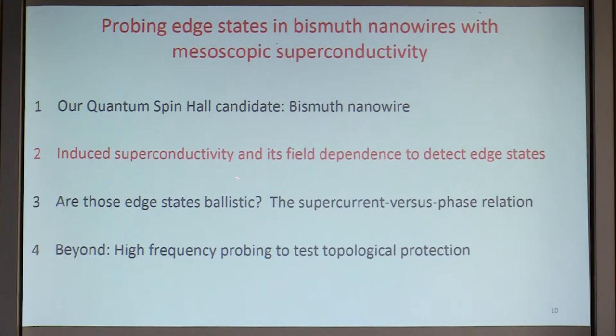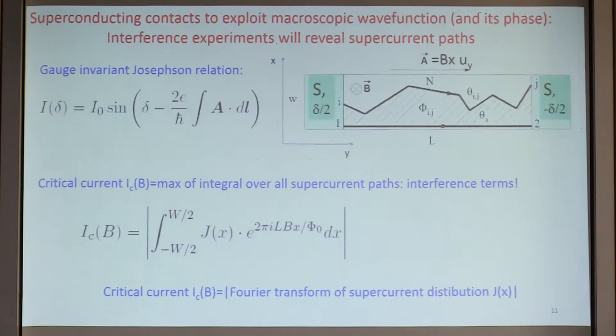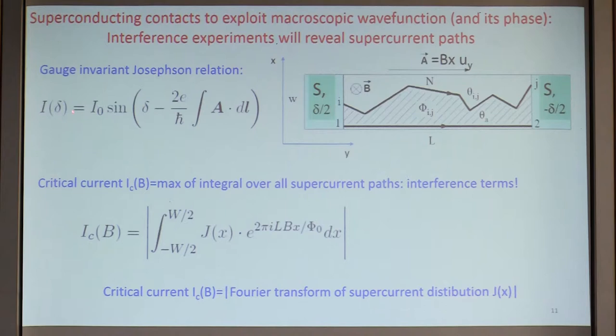Now I'm going to show the induced superconductivity and how we use the field dependence to detect the edge states. Why do we use superconductivity? Because we like its phase. The macroscopic wave function of superconductivity gives us a handle to realize interference experiments. We have the gauge invariant Josephson relation that takes into account the vector potential, and therefore the current-phase relation will depend on how electrons or Andreev pairs travel in this material. The critical current is just the absolute value of the Fourier transform of the current distribution in space, transformed with the field.